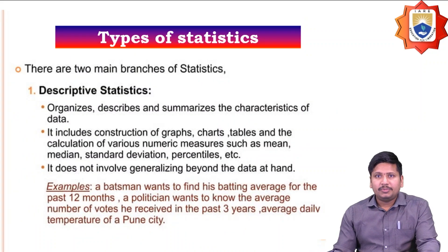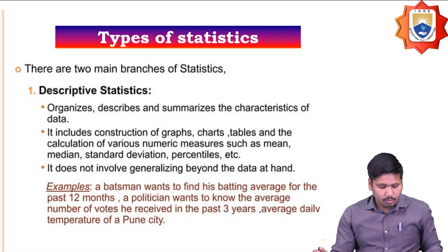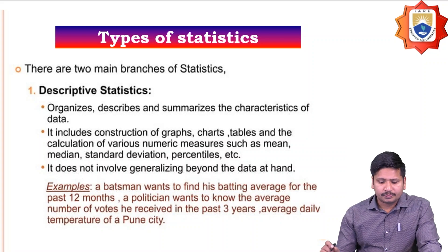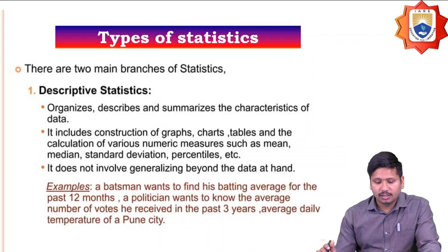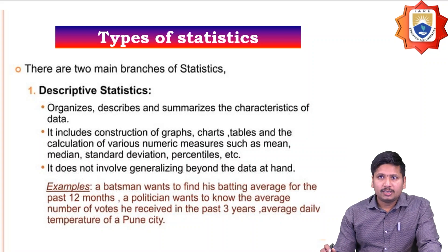There are two different types of statistics: descriptive statistics and inferential statistics. Descriptive statistics organizes, describes, and summarizes the characteristics of data. It includes the construction of graphs, charts, and tables, along with the calculation of various numerical measures such as mean, median, standard deviation, and percentile. It does not involve generalizing beyond the data at hand.